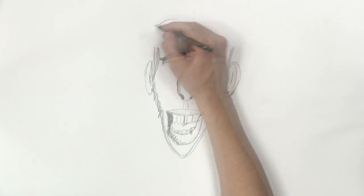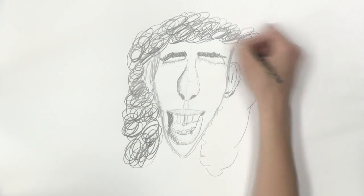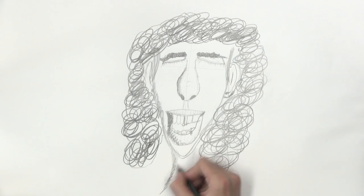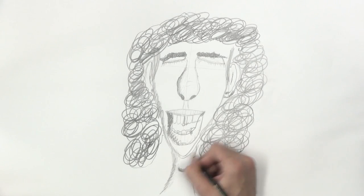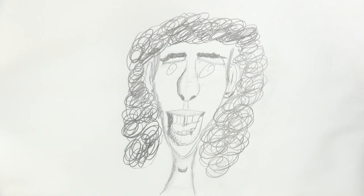Let's do the volume of the hair. Good! The neck. And very carefully the iris of each of the eyes. And it's ready!